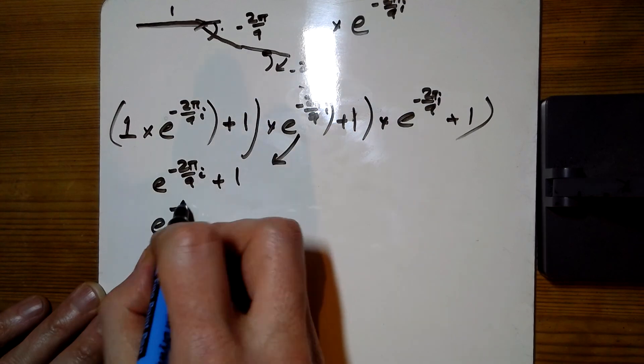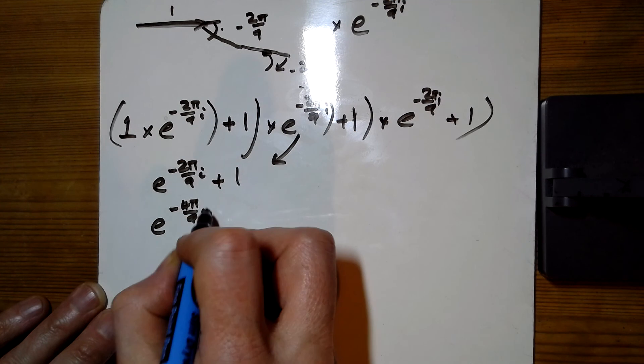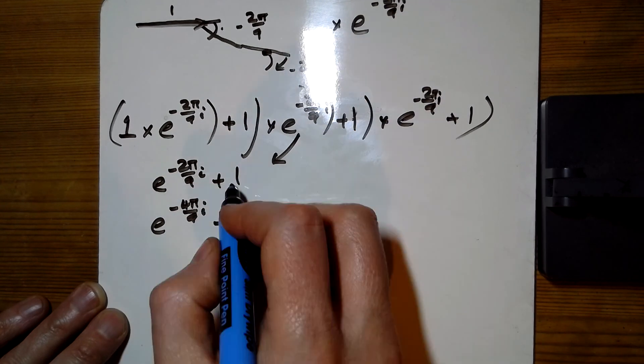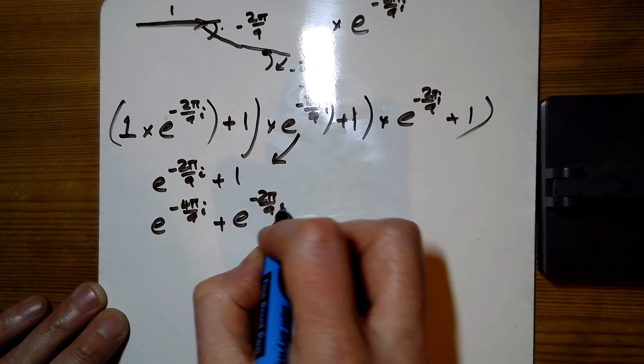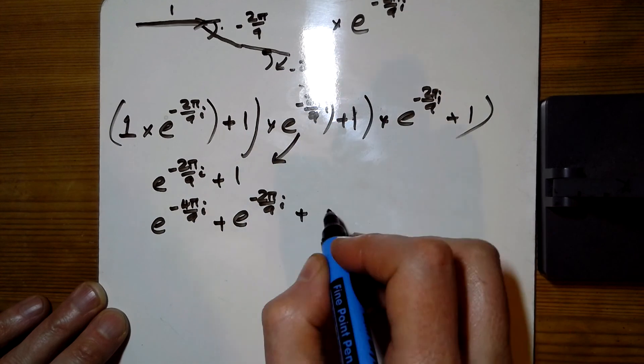So this is now going to give us e to the minus 4pi over 9i, plus, timesing that by 1, e to the minus 2pi over 9i, and then add the 1.